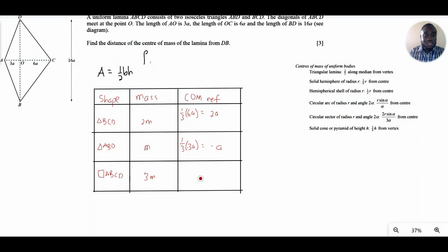The center of mass of the entire solid, I'm just going to call that x-bar for now. Now let's go ahead and take a moment about the axis BD and then calculate the location of the center of mass of our lamina. So we have 3m times x-bar equals 2m times 2a plus m times negative a.